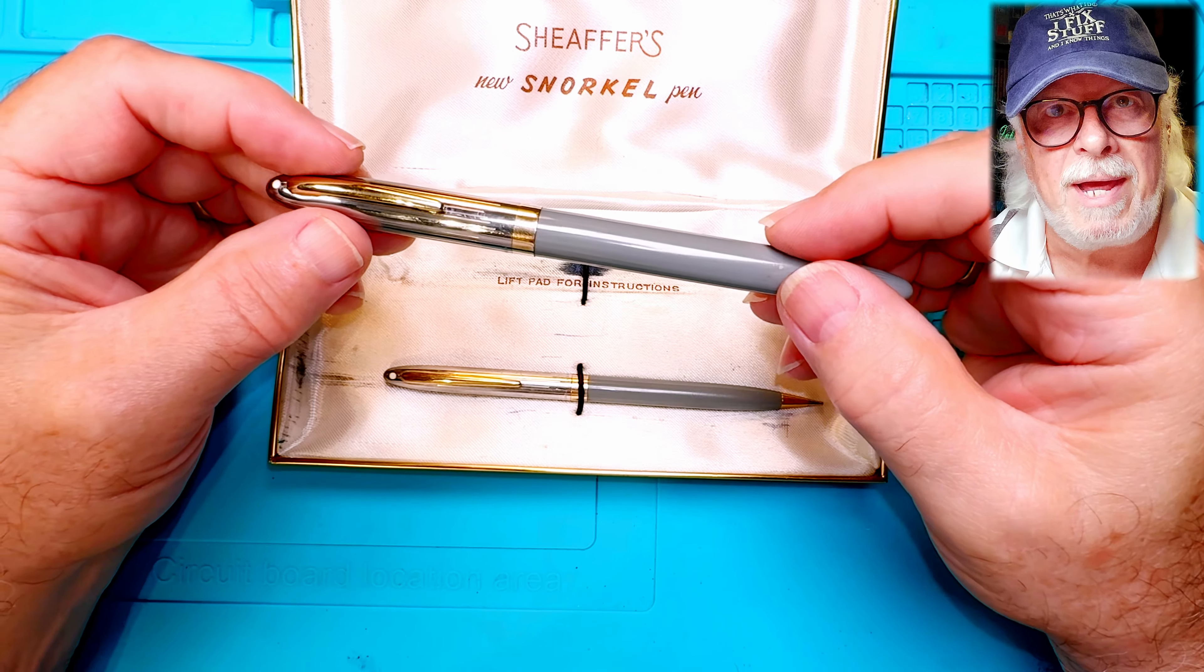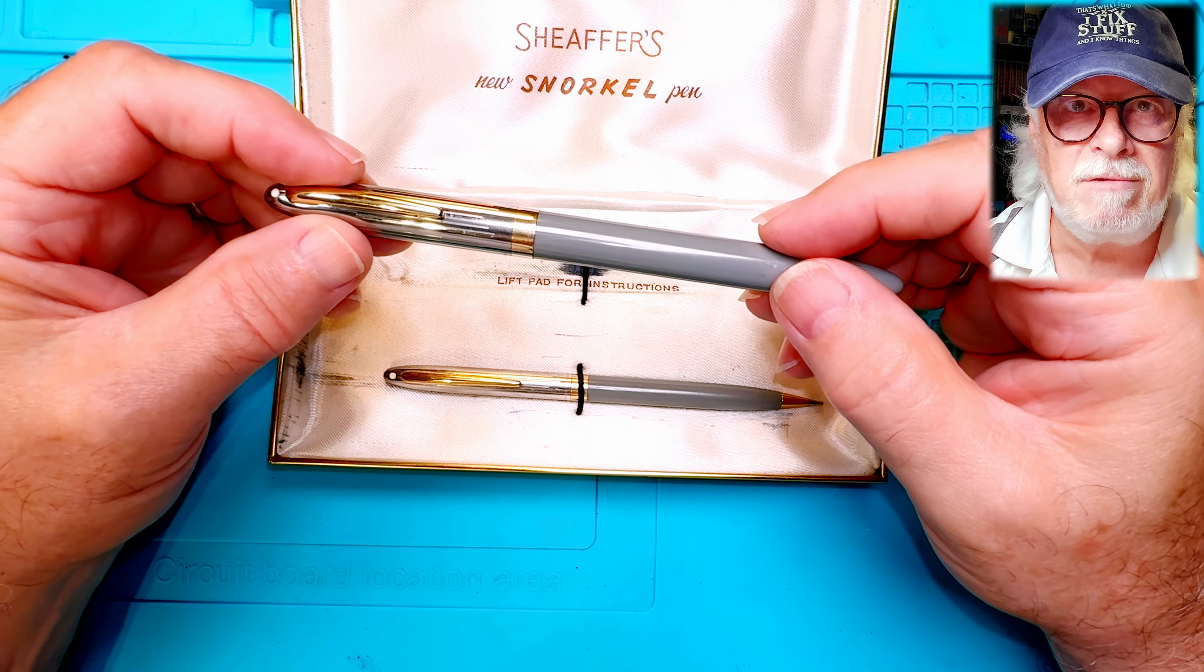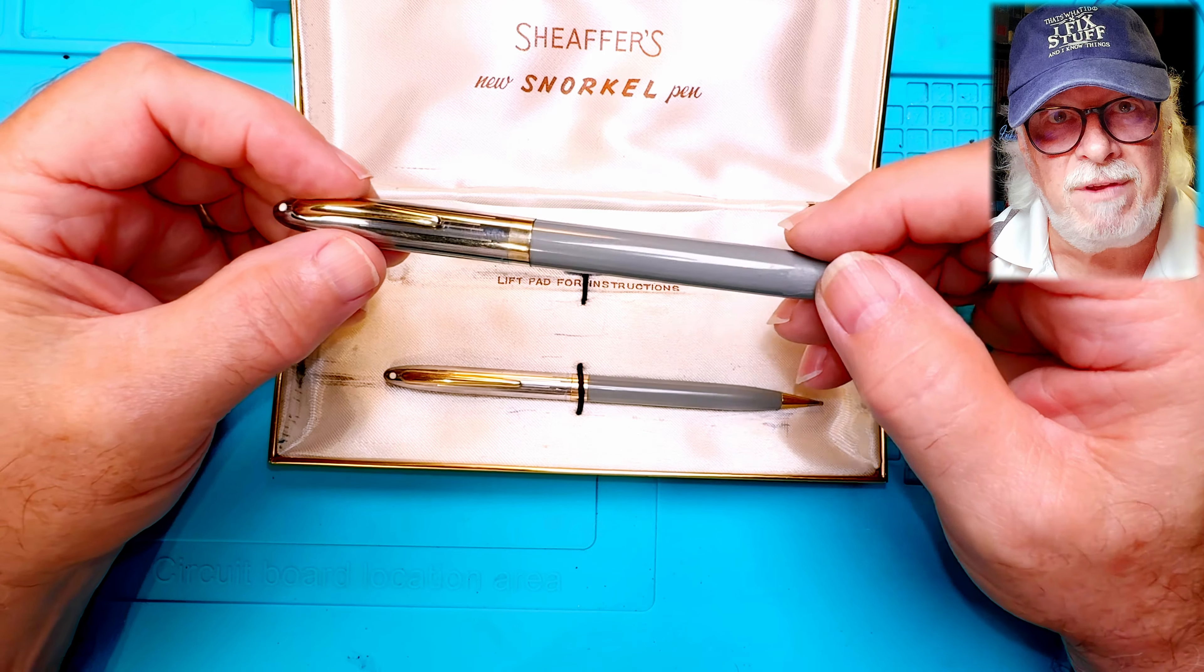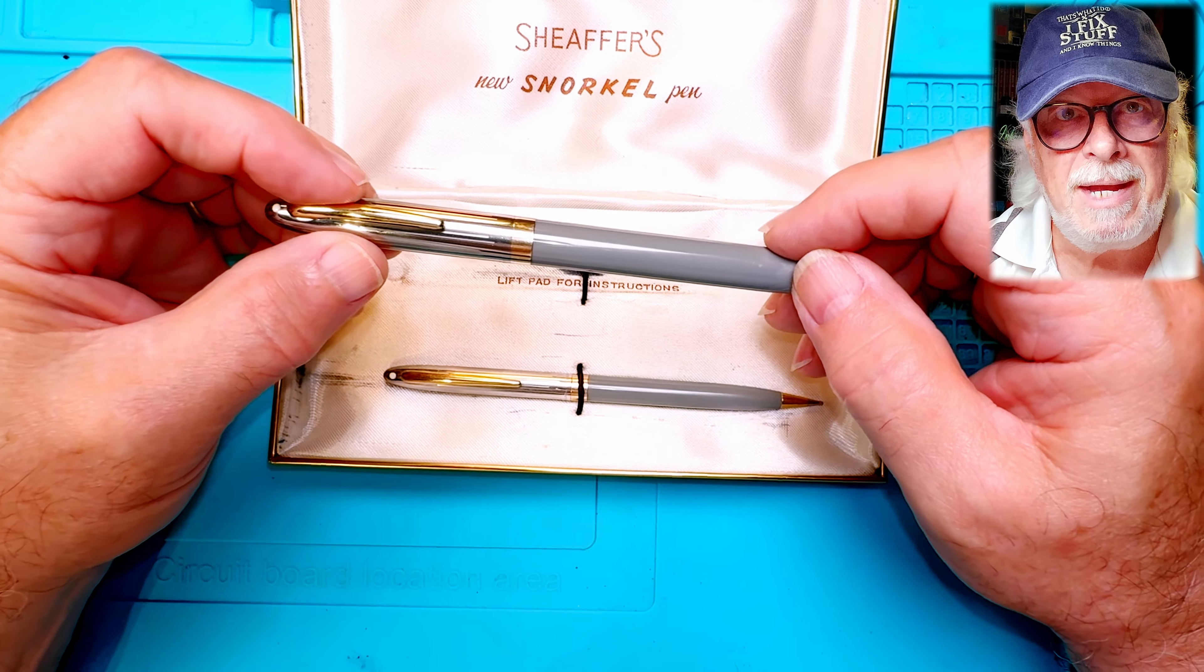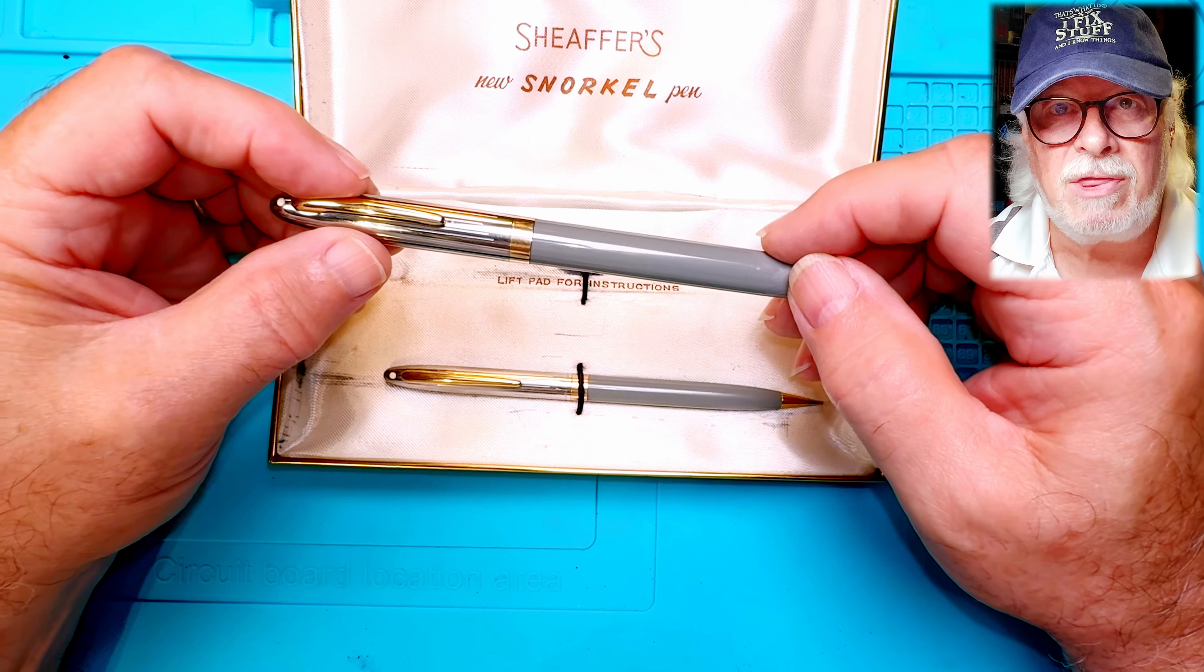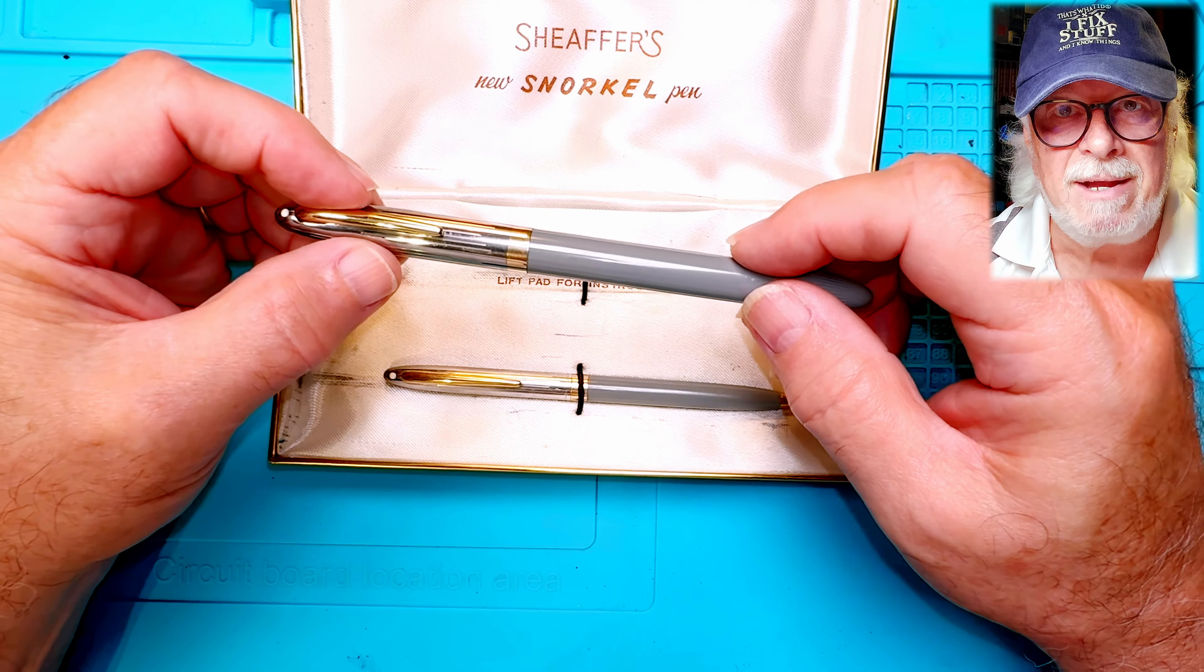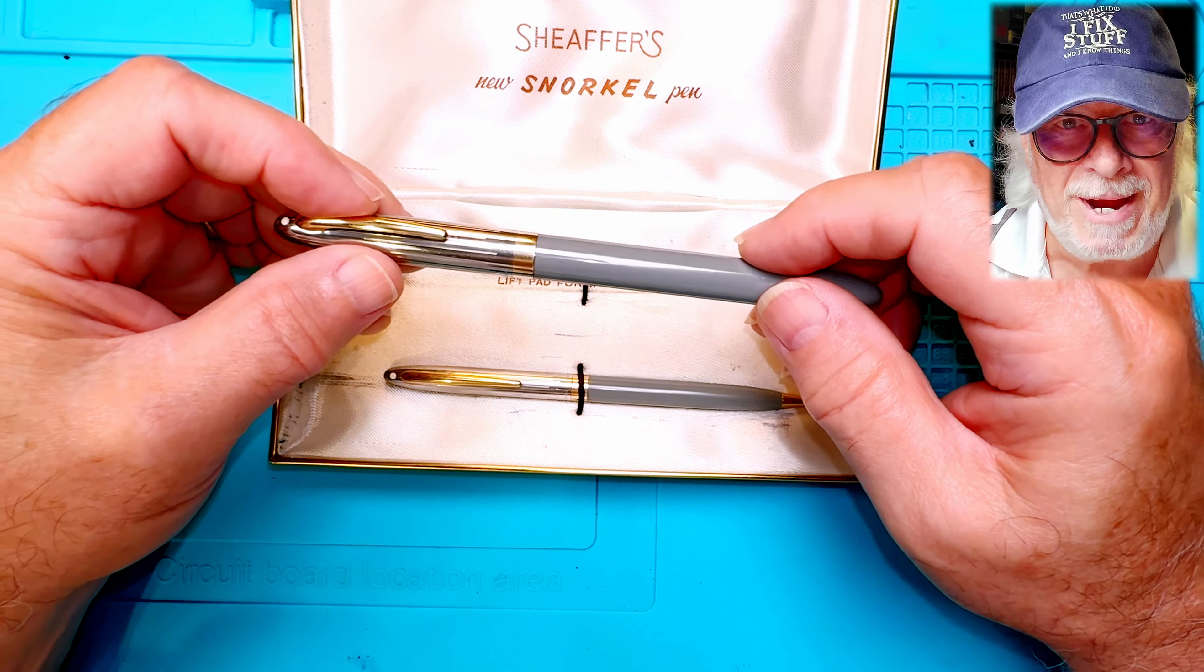And there also might be some snorkel experts out there that might have suggestions for how I might be able to get the touchdown filling system working again. I'll take you through the steps I took to get the pen working, replacing the seals and gaskets and the touchdown filler sack and how the nib writes right now.